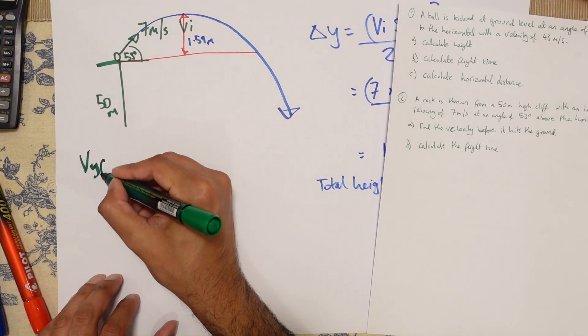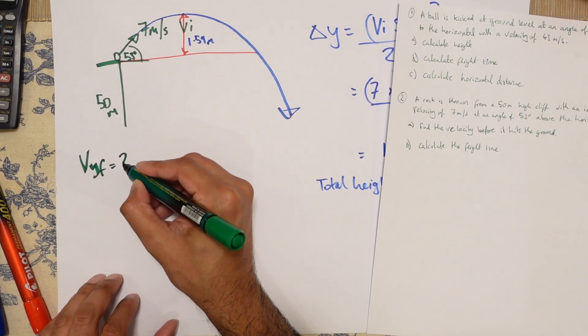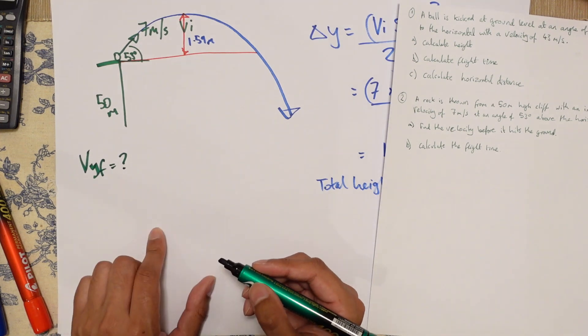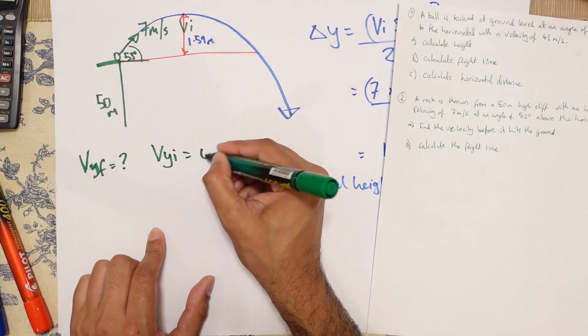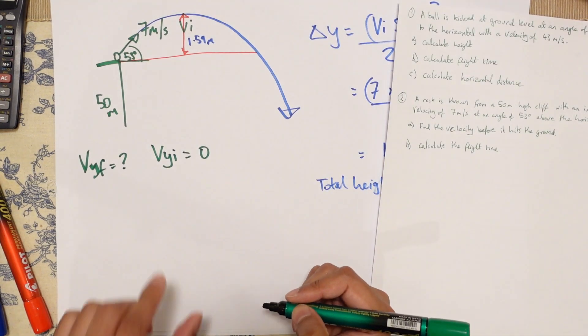So VYF is question mark. VYI at the very top is going to be zero.